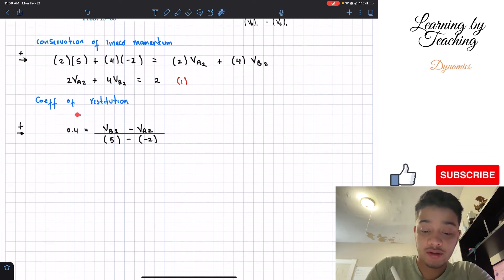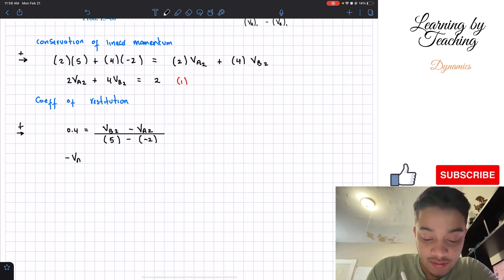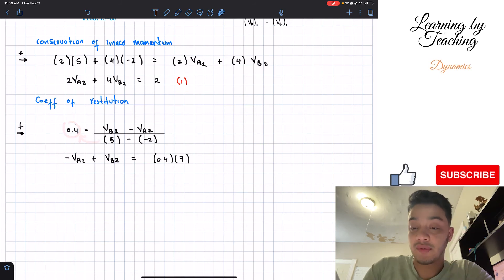I'm going to solve for this equation a little bit more to have a general form just like this one. So we're going to have that negative, the velocity of A, plus the velocity of B, not squared, in its second state has to be equal to 0.4 multiplied by 7, right? So the addition between these two is equal to 7. And then we are going to pass it to multiply by 0.4. And again, this will be equal to 2.8 when we plug it into our calculator. And here is our second equation.